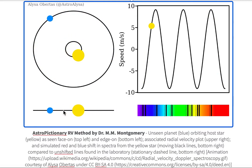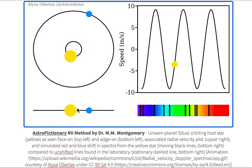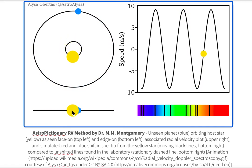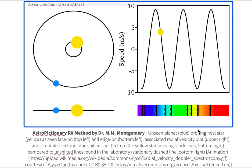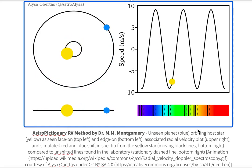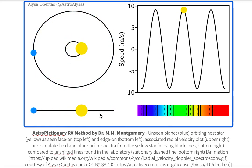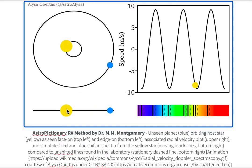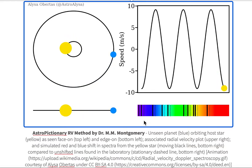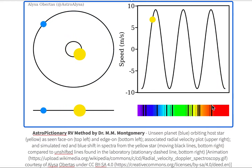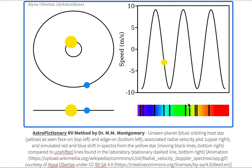Both the exoneptunian and the host star are orbiting the common point called the center of mass. In the edge-on view we can see the exoneptunian passing in front and then going behind. When we have an edge-on system like this, we are able to get spectra that show the shift in the wavelength of the observed star. So focusing only on the star, we get the observed spectrum — say the hydrogen Balmer lines and the sodium doublet.